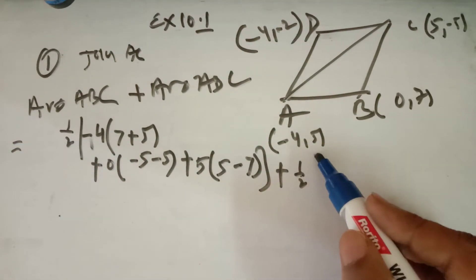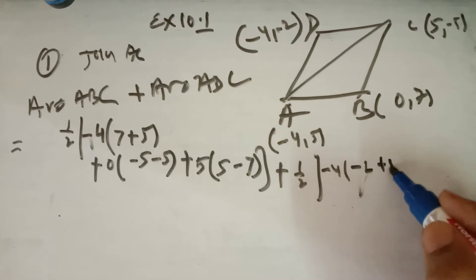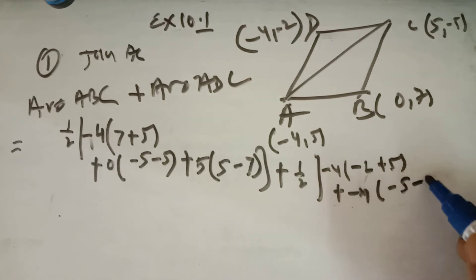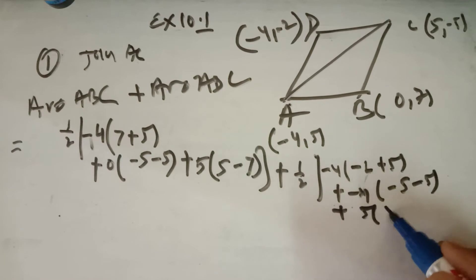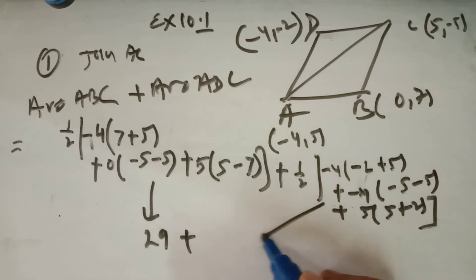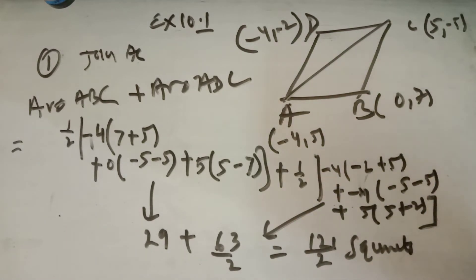For triangle ADC: Area = ½ |x1(y2 - y3) + x2(y3 - y1) + x3(y1 - y2)|. Adding both triangle areas: the area of triangle ABC comes out to be 29 and the area of triangle ADC is 63/2. The total area of quadrilateral ABCD is 121/2 square units. You can also join diagonal BD and add those two triangle areas to get the same result.